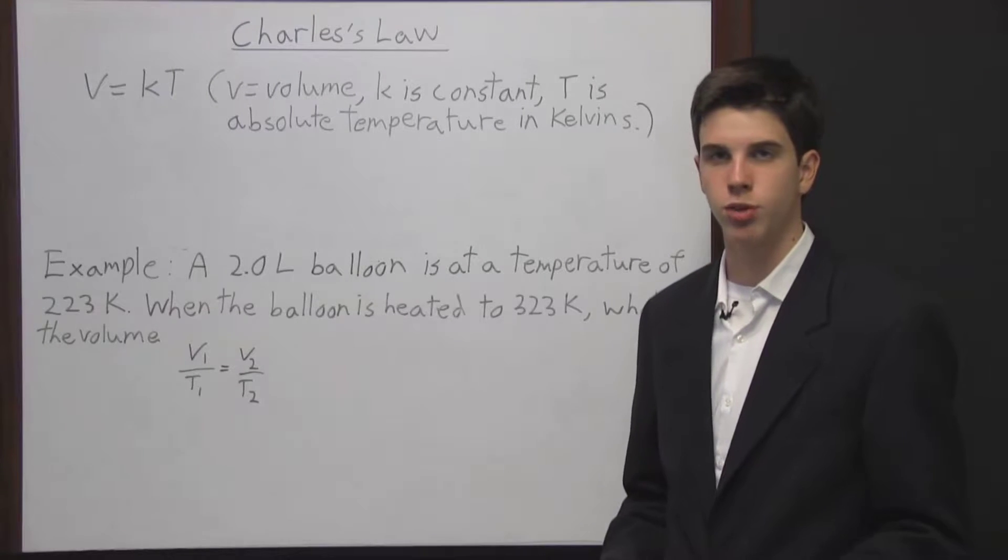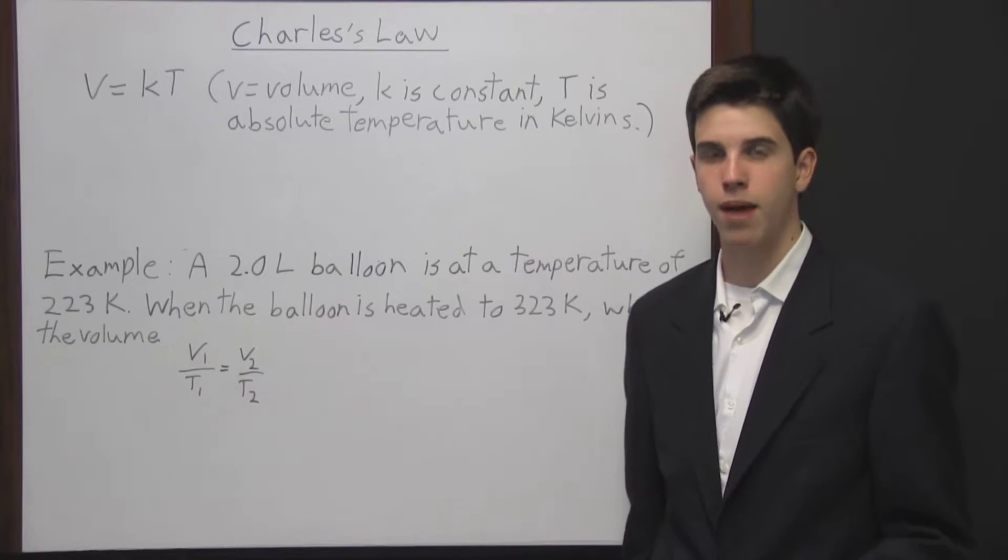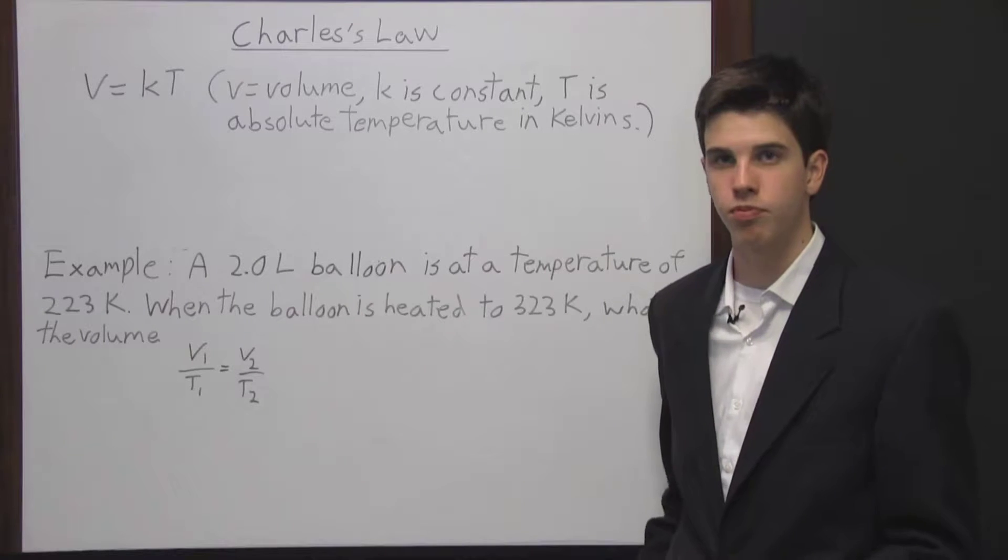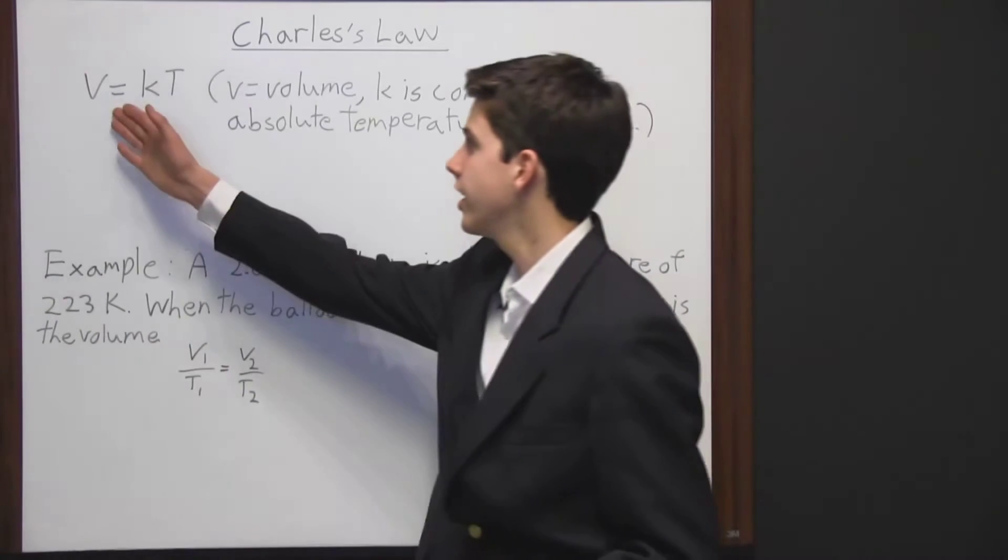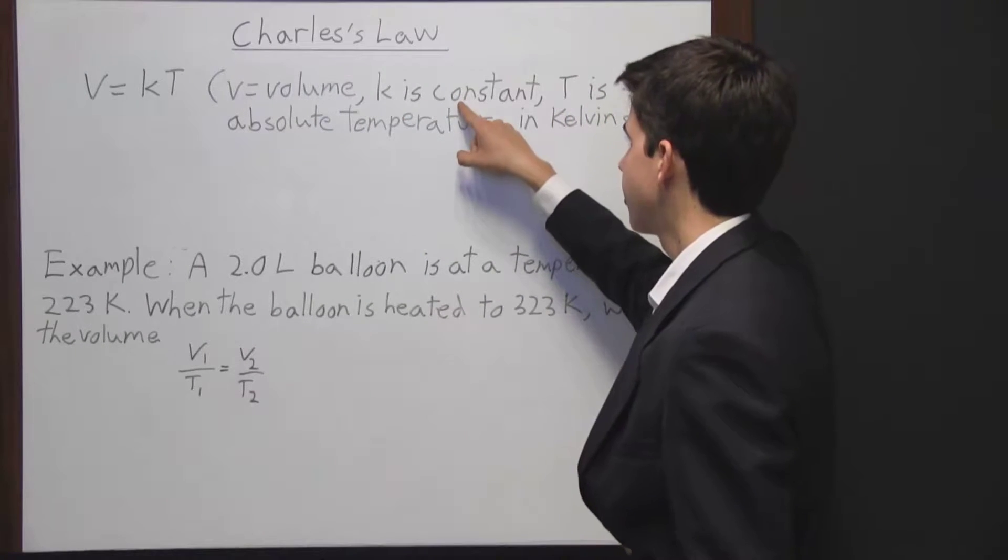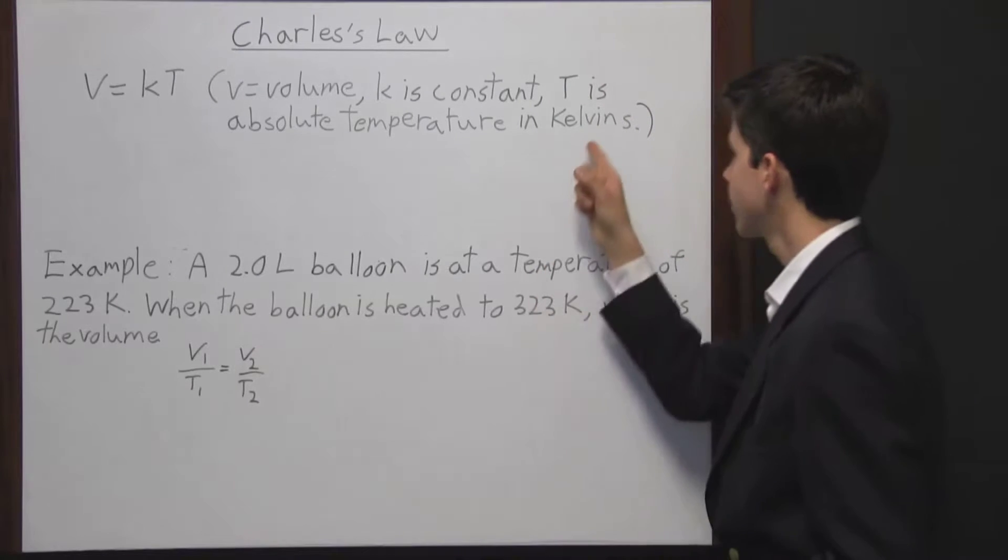Charles's law shows the relationship between volume and temperature, but in order for Charles's law to be correct, the pressure and the amount of gas must remain constant. Charles's law can be expressed in the equation V equals K times T, where V equals volume, K is a constant meaning it's always the same, and T is the absolute temperature expressed in Kelvins.